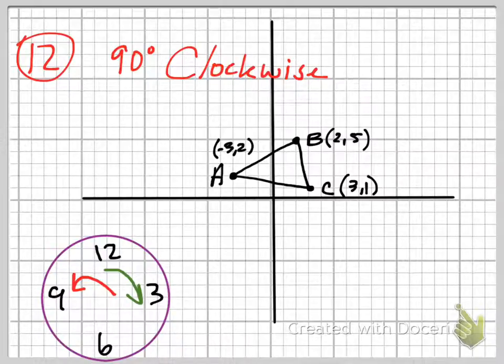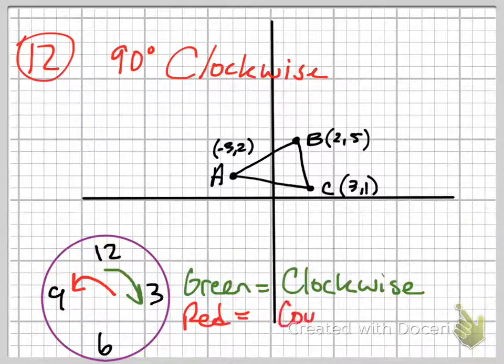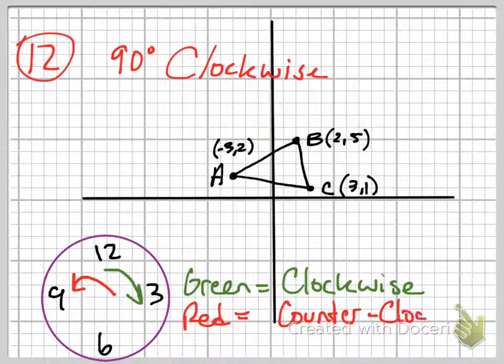So I'll go ahead and write it in green here. So the green equals clockwise. And then the red arrow means counterclockwise.